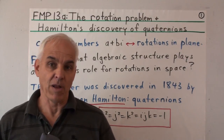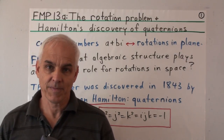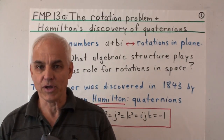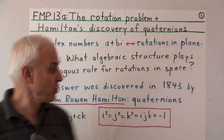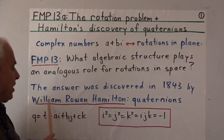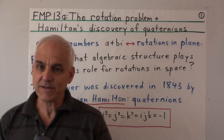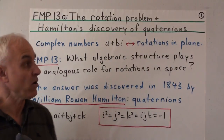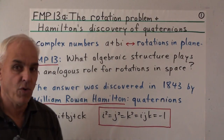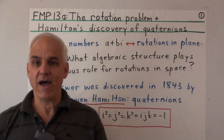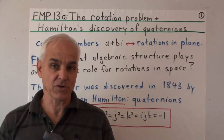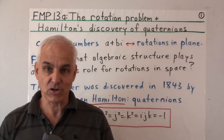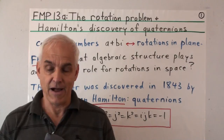Hello everyone, I'm Norman Wildberger. In today's famous math problem, we're going to look at the famous Irish mathematician William Rowan Hamilton and his discovery of quaternions in the context of what I call the rotation problem, which is the problem of how we describe, understand, and manipulate rotations in three-dimensional space algebraically.